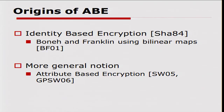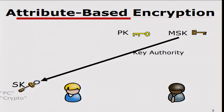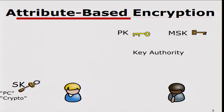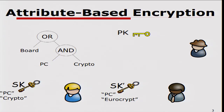Generalizing this notion, we have attribute-based encryption, where you don't encrypt to identities but to policies. We're going to have a setup authority that generates a master secret key along with a public key. It publishes the public key and uses the master secret key to issue specific secret keys for users. For example, a crypto program committee member gets a secret key, and we can have another key for a PC member of the Eurocrypt committee. The key authority then goes away. A user can then encrypt a message such that anybody on the board of IACR or a PC member of crypto can decrypt it, and he generates a ciphertext with this policy.